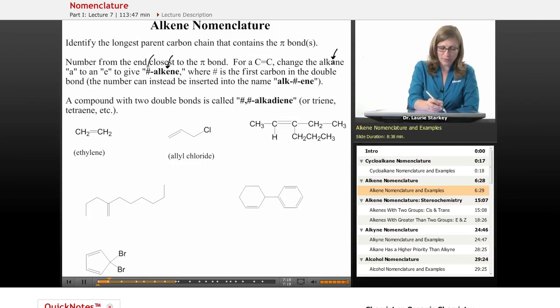And we're going to put a number out front that tells the reader where the double bond starts, what's the first carbon of that carbon-carbon double bond. So we're going to call it a number alkene, or you can insert that number inside the name. This is actually kind of the preferred way for IUPAC, but I think it's a little more difficult for beginning students to look at that convention.